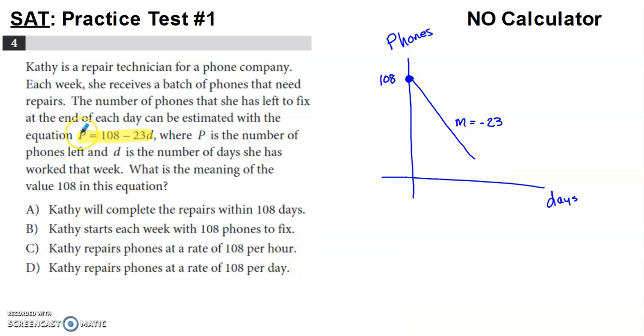Y is isolated in y equals mx plus b in slope-intercept form. P is isolated within this equation. X is multiplied by the slope in y equals mx plus b. d is multiplied by negative 23 within this equation.